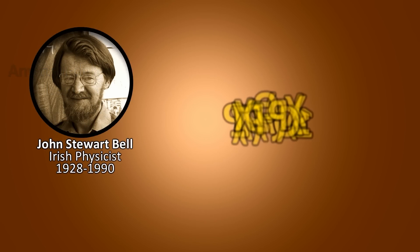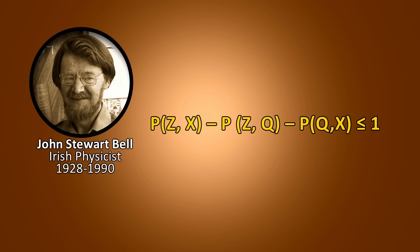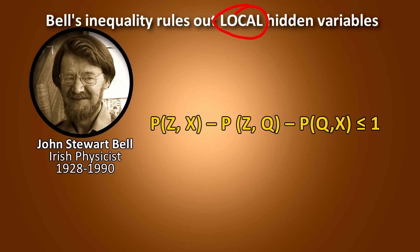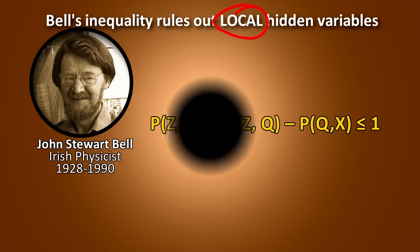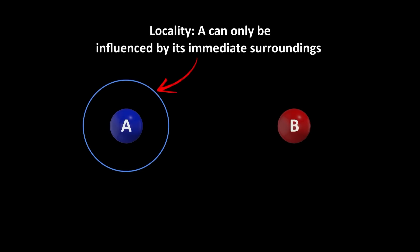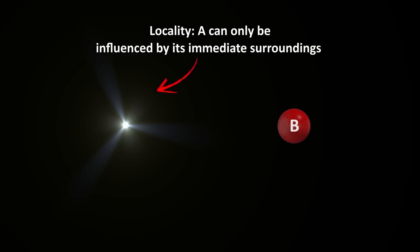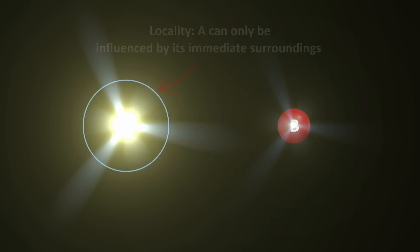Now you might say, wait, I thought Bell's inequality proved that hidden variables don't exist. If you don't know what Bell's inequality is, I have a video on it here. What Bell's inequality proved, if its assumptions are correct, is that we can rule out local hidden variable theories. Locality is the idea that a particle can only be influenced by its immediate surroundings. This is the idea of local causality.